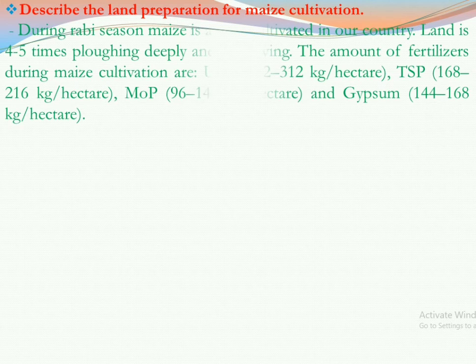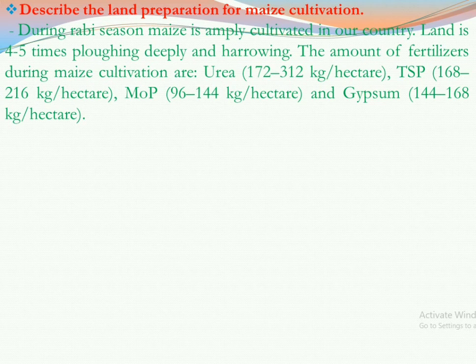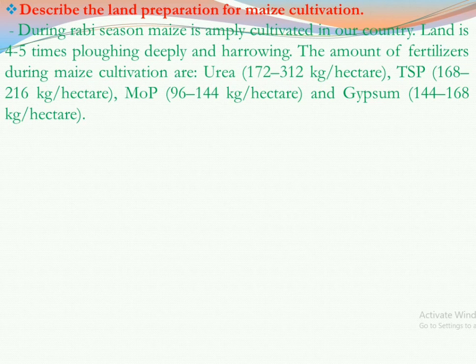Now let us see land preparation for maize cultivation. During the rabi season, maize is mostly cultivated in our country, though maize is actually a season-neutral crop. The land is plowed deeply and harrowed 4 to 5 times. The fertilizer amounts for maize cultivation are: urea 170 to 312 kg per hectare, TSP 168 to 216 kg per hectare, muriate of potash 96 to 144 kg per hectare, and gypsum 144 to 168 kg per hectare.